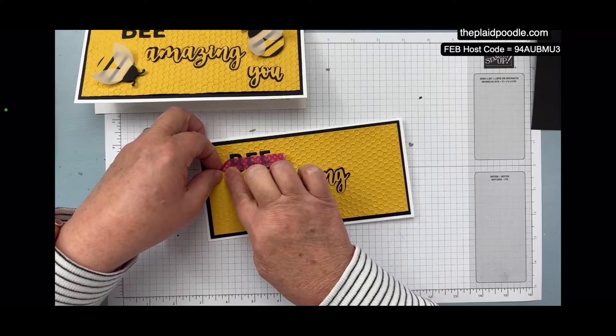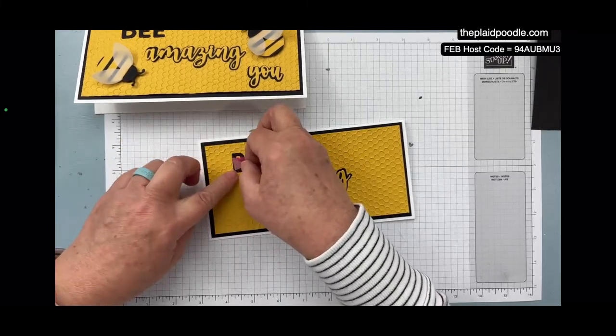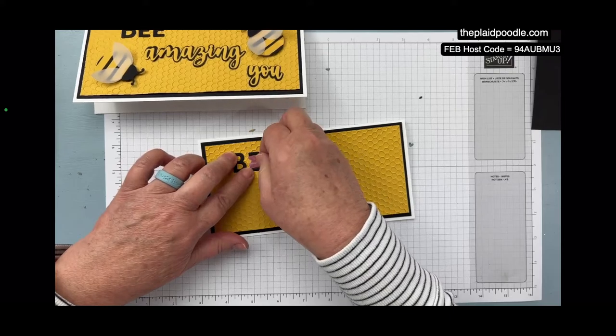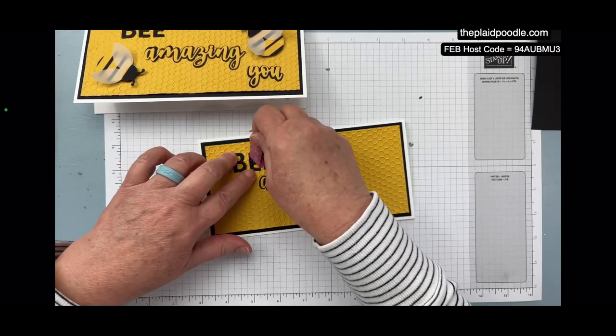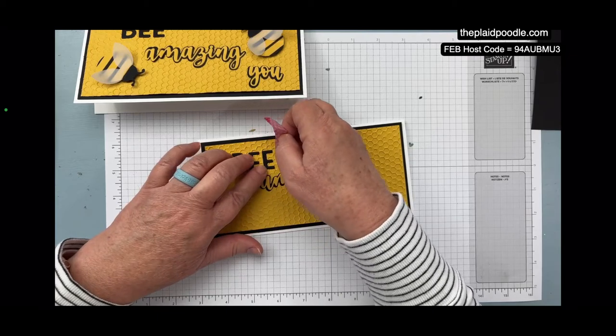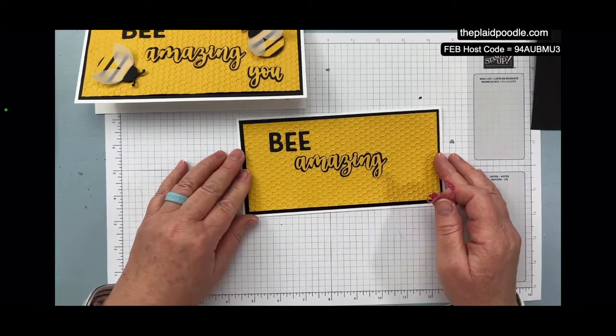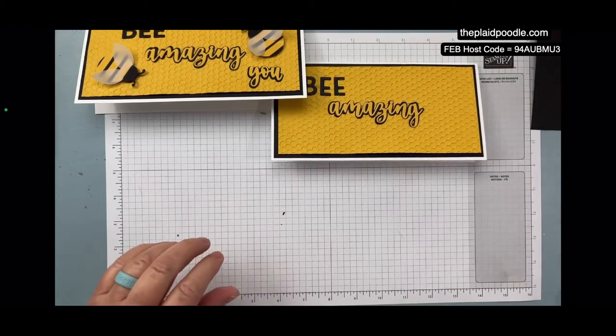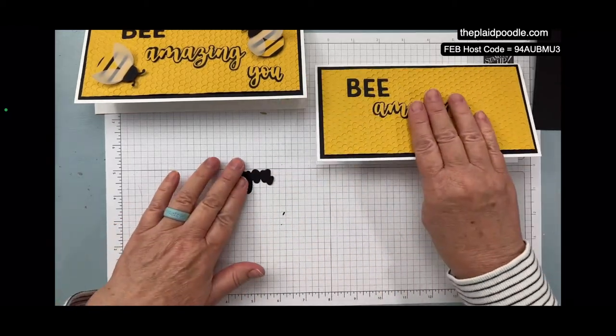So the washi tape trick works a lot like that press and seal to get it all lined up the way you want it. I'm very gently taking it off. Here we go. And then we're going to do the same thing with the U die.